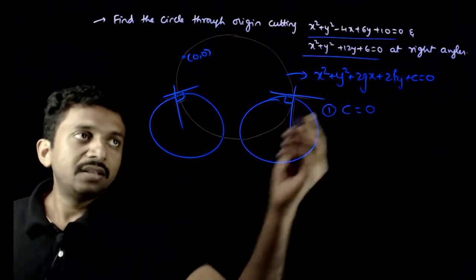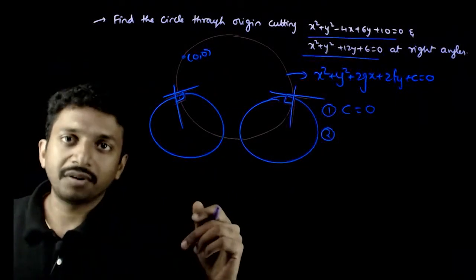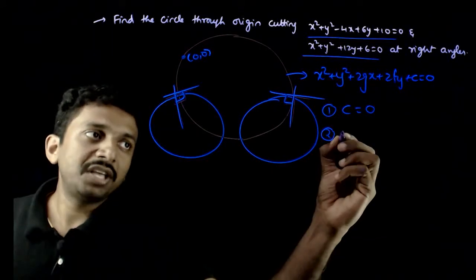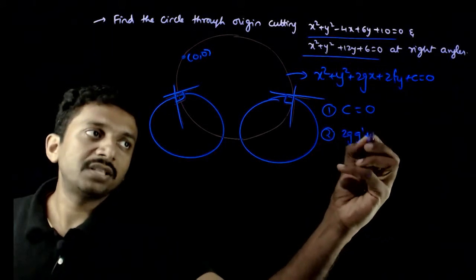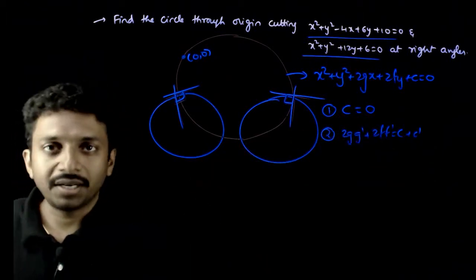So, now, next condition. This circle and this circle are orthogonal. So, the equation is 2g g dash plus 2f f dash is equal to c plus c dash. This is the condition for orthogonality.